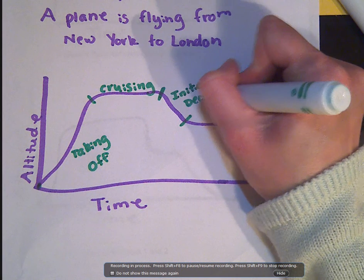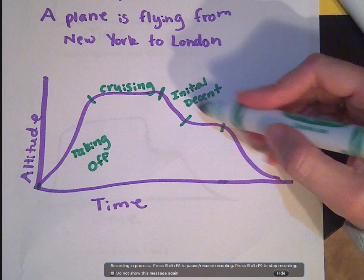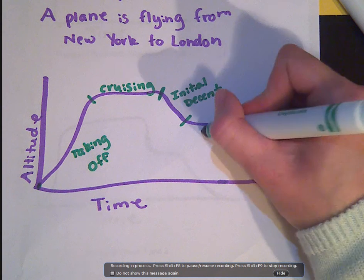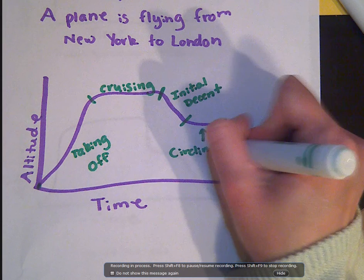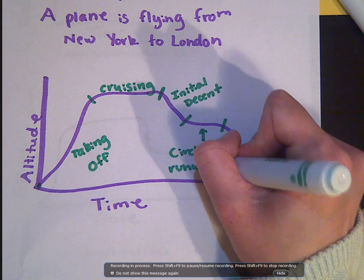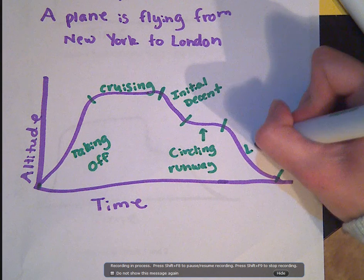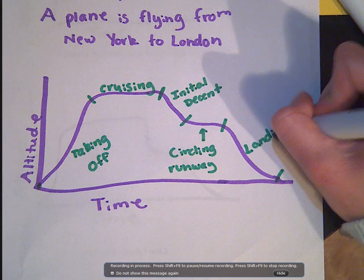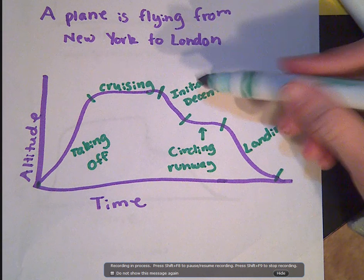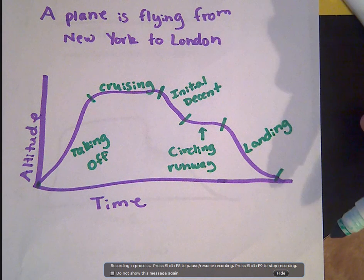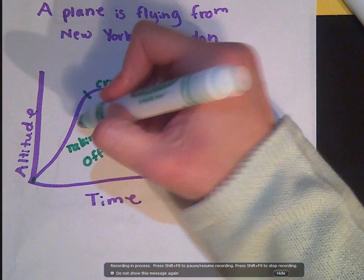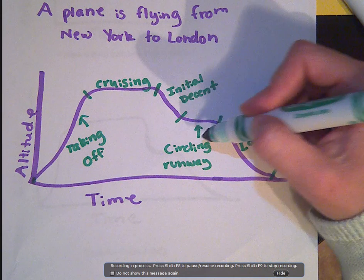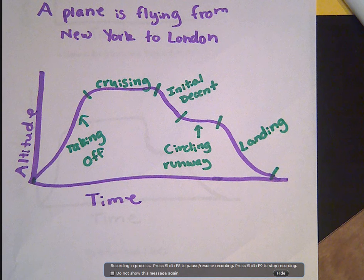Then it levels off — maybe there was another airplane. So from here to here, this might be where it's circling the runway; maybe they had to wait to get clearance to land. And then the last step is the actual landing. So: taking off, cruising, initial descent, circling the runway, and landing. Please pause the video and try Quick Check 1 and Quick Check 2.